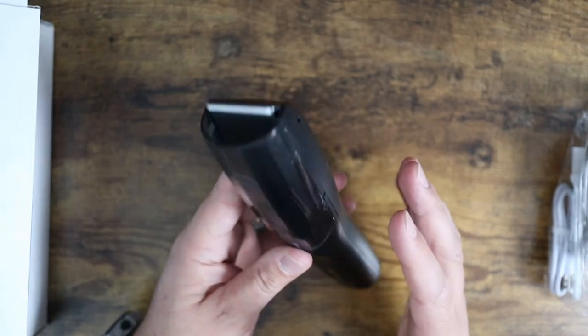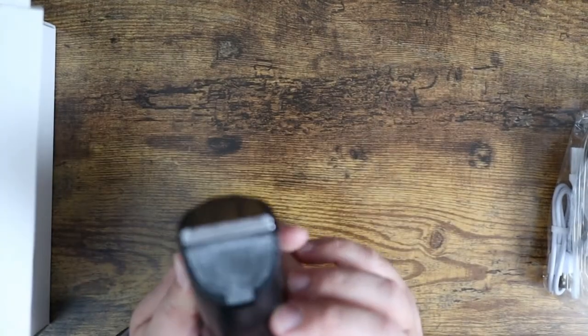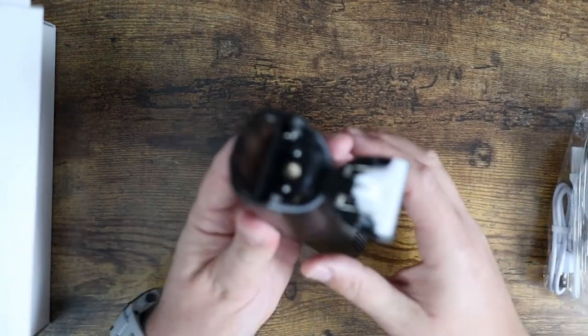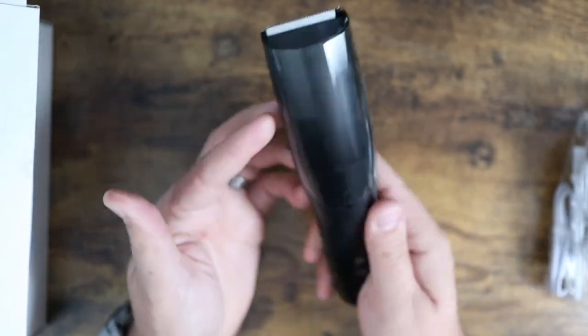Again, it does come with some guards on here, so you can actually customize the length that you need. It's very easy to clean. Simple to clean out all this stuff. You pop that back and you can get inside there, get the brush in there and get all that cleaned out. Then you just snap it back in place and you're good to go.